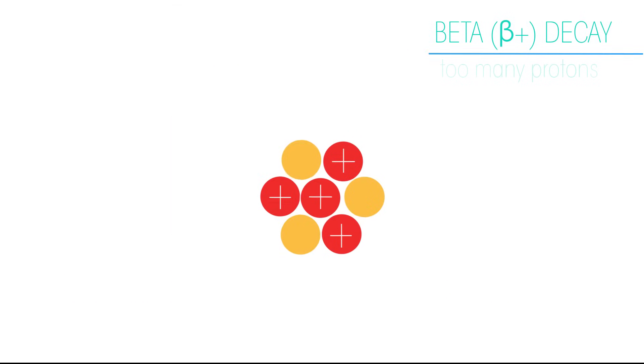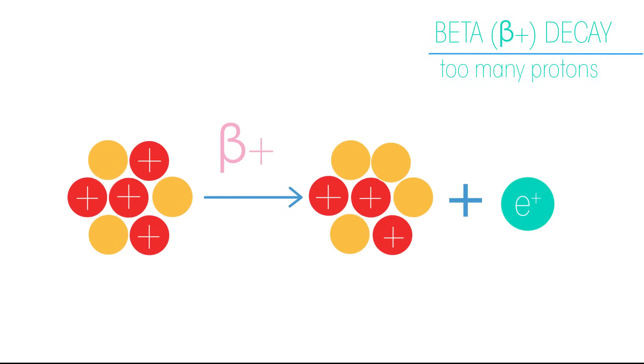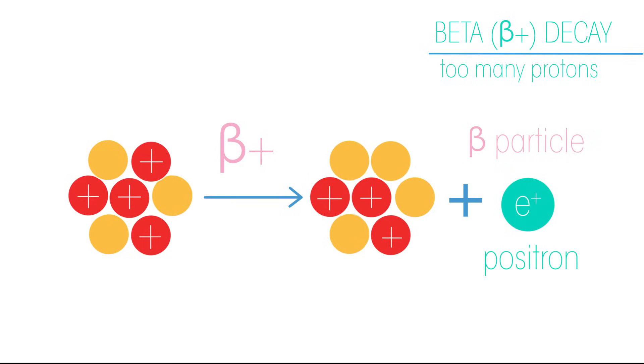When an isotope has too many protons, it decays by beta plus decay. A proton is converted into a neutron and a positive beta particle called a positron.